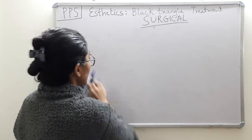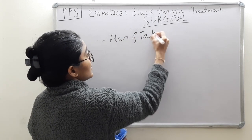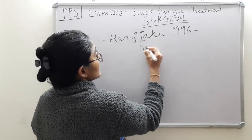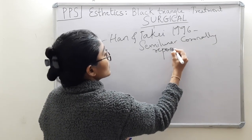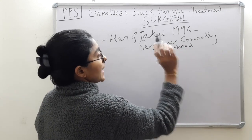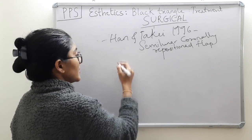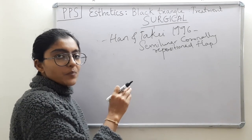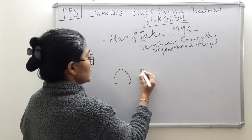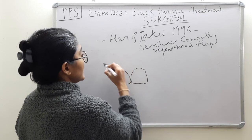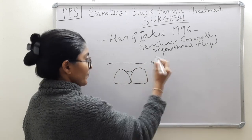Moving on to the next technique: Han and Takai — the semilunar coronally repositioned flap technique. If you have watched my video on advanced flaps discussing coronally positioned flap and semilunar flap technique, this will be easy to understand. We will discuss this technique first from the facial aspect, then from the proximal aspect. On the facial aspect, let us say this is the interdental papilla and this is the mucogingival junction. The first step: incision.